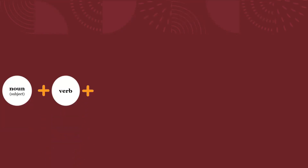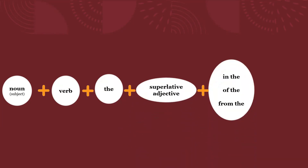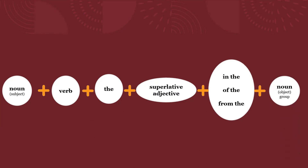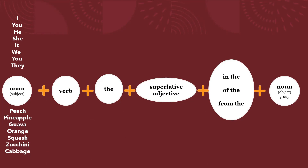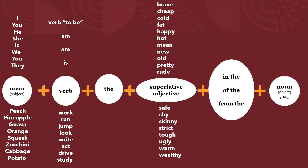Now, for the grammar structure, we need a noun, plus a verb, plus 'the', plus the superlative adjective. It can be pronouns or nouns. In this case, we talk about fruits and vegetables. The verb can be 'to be' or any other verb. Short adjectives like brave, cheap, etc. And the group: fruit, vegetables, food, table, dish, kitchen.